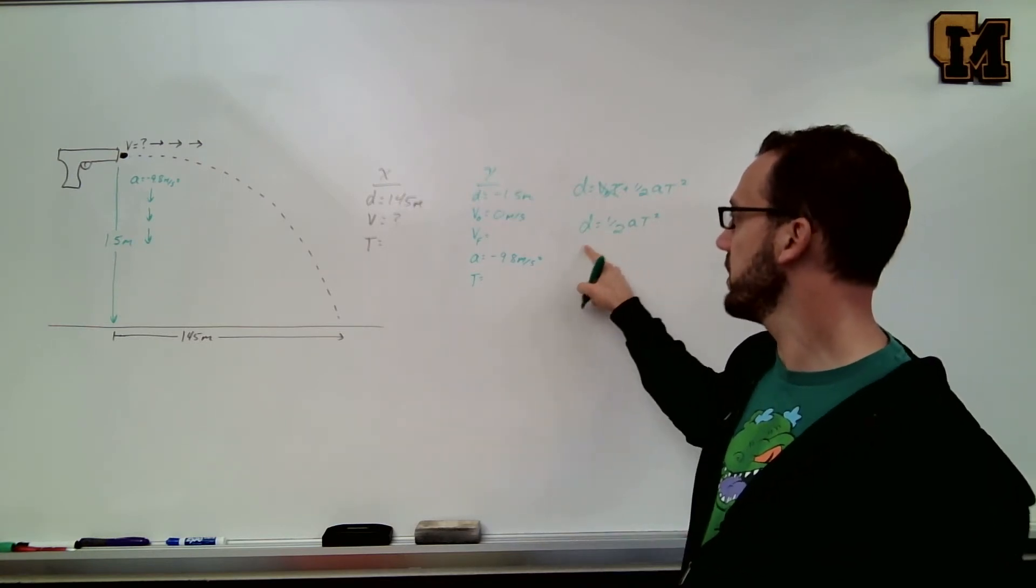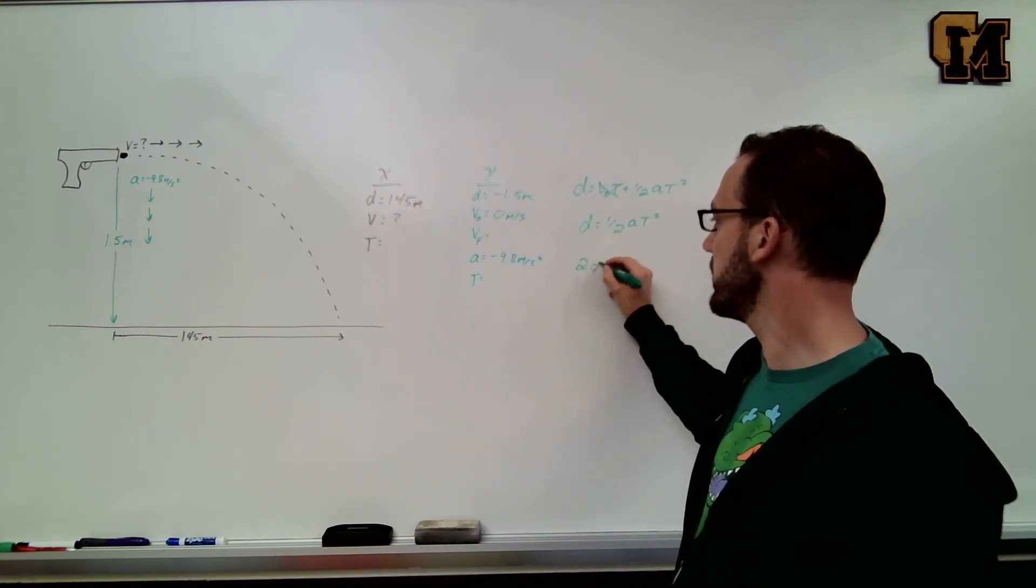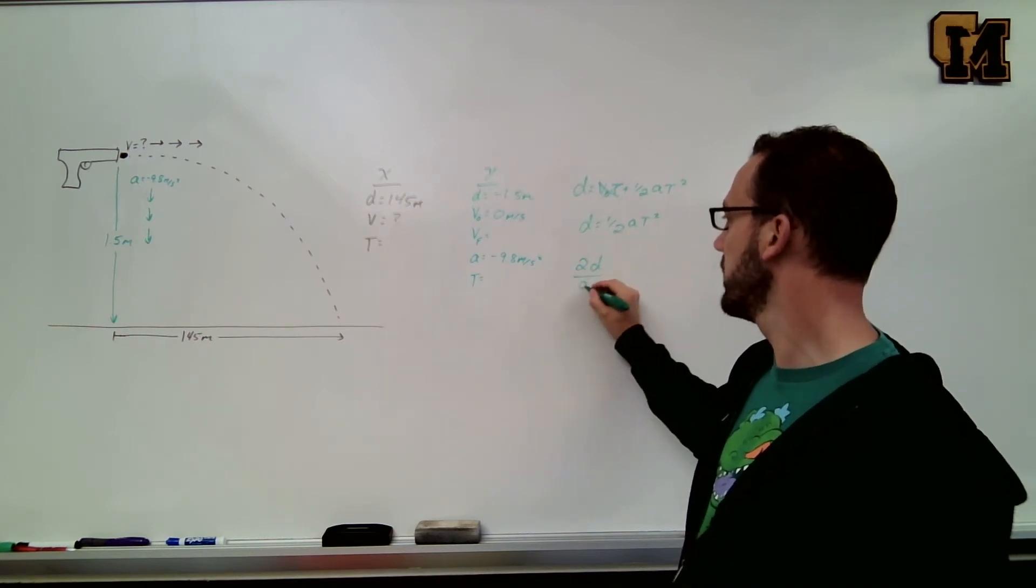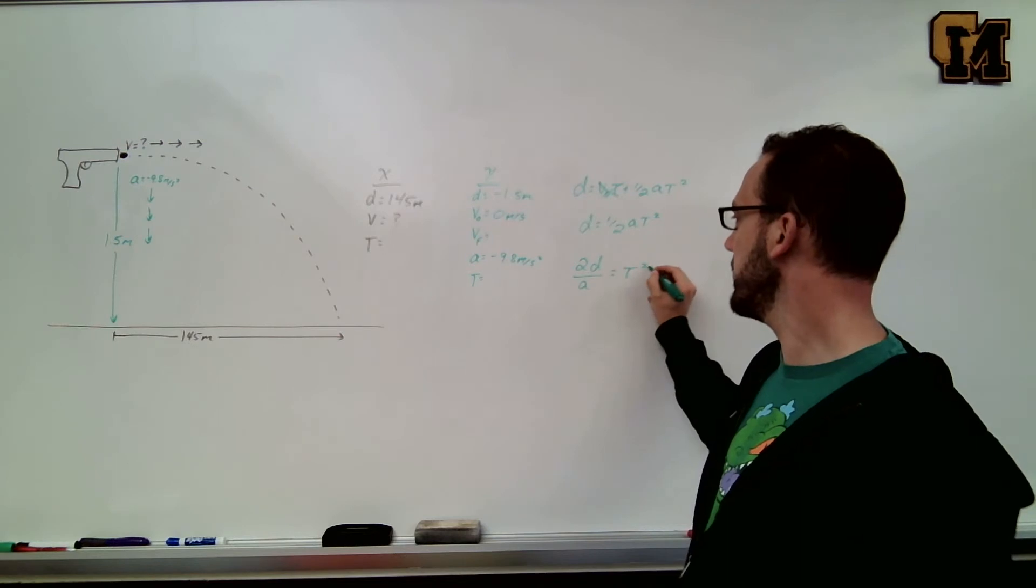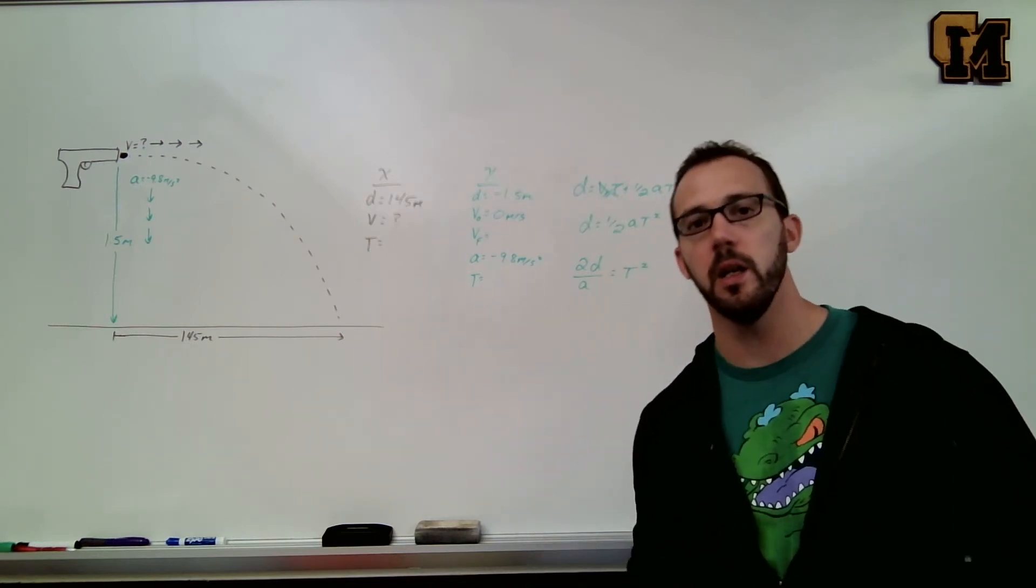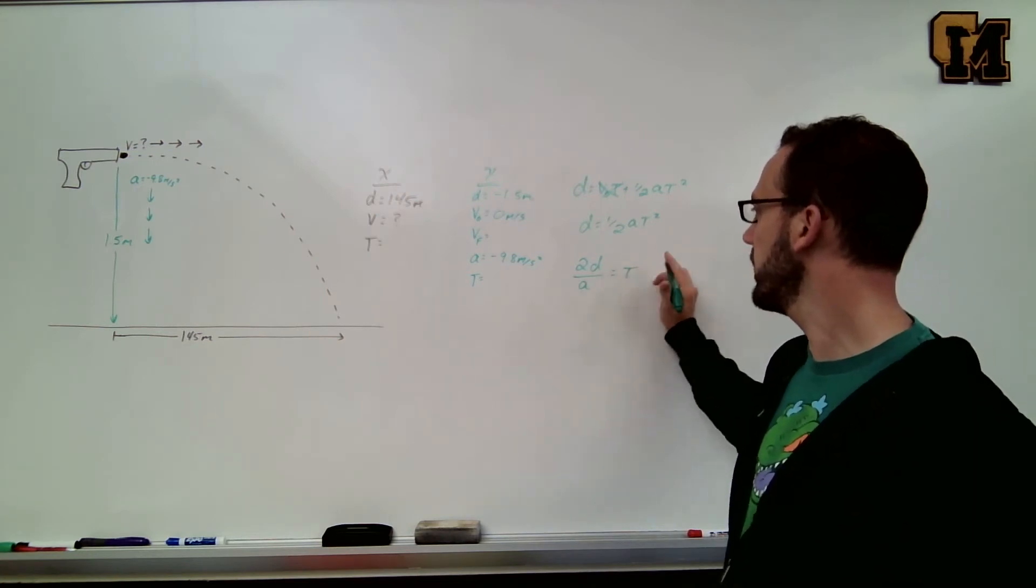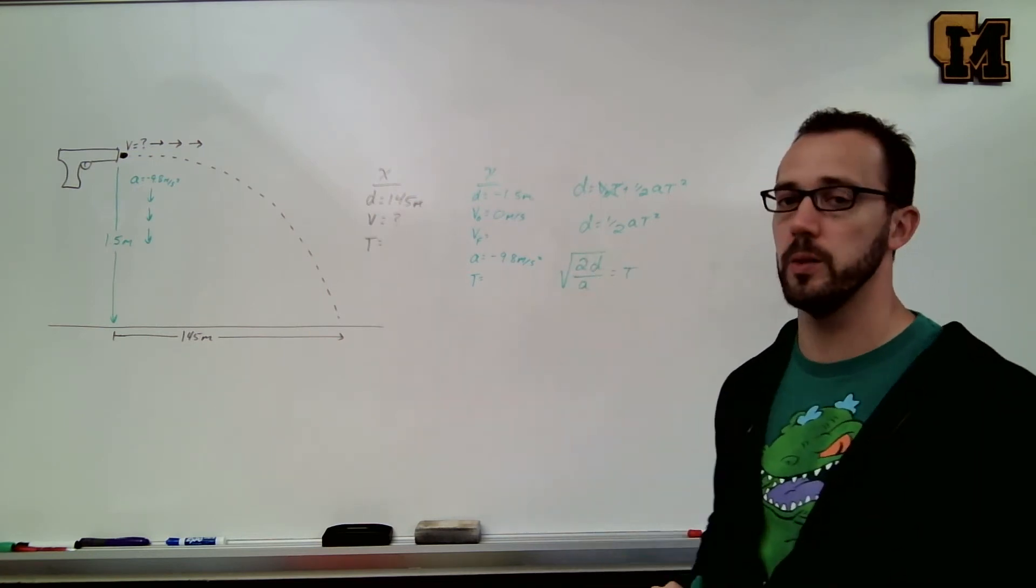To get rid of the half, I'm going to multiply by 2, so that gives me 2d on the left side. I'm going to divide by a and that's going to get t by itself. But t is squared. We don't want t to be squared, we just want regular t. So to get rid of the squared, I do the square root.